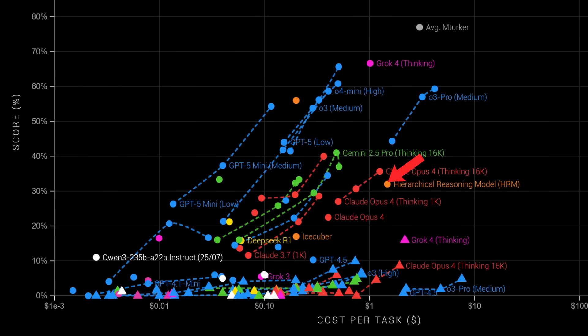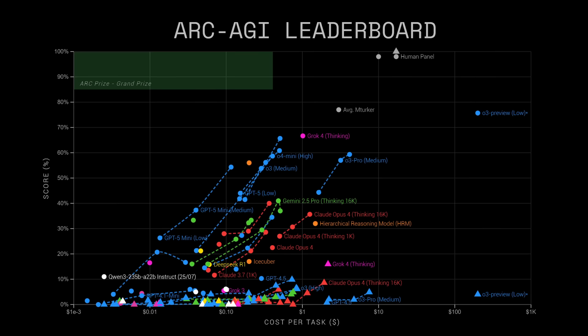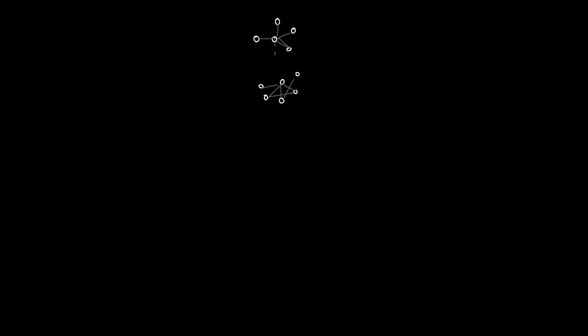HRM scored 32% in ARC AGI 1 and 2% in ARC AGI 2. And the more impressive part about it is that HRM didn't even do any pre-training.